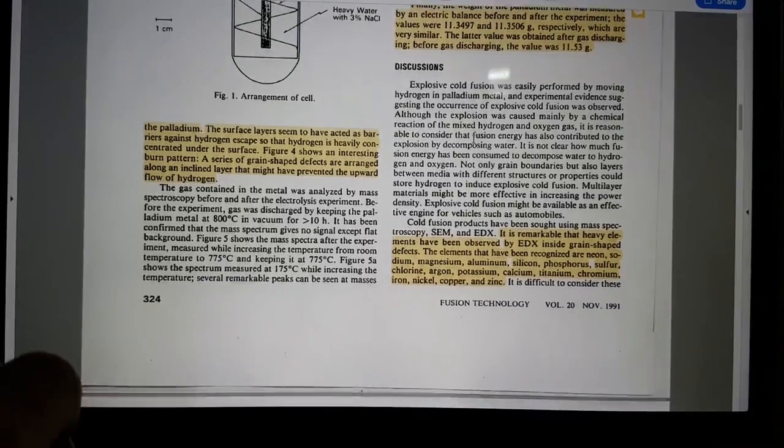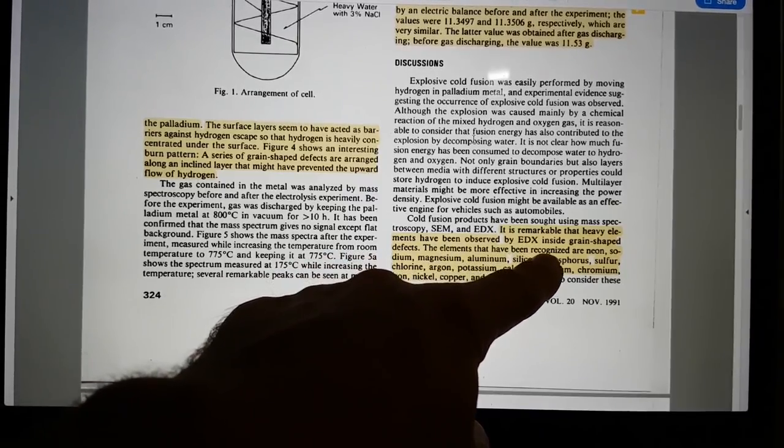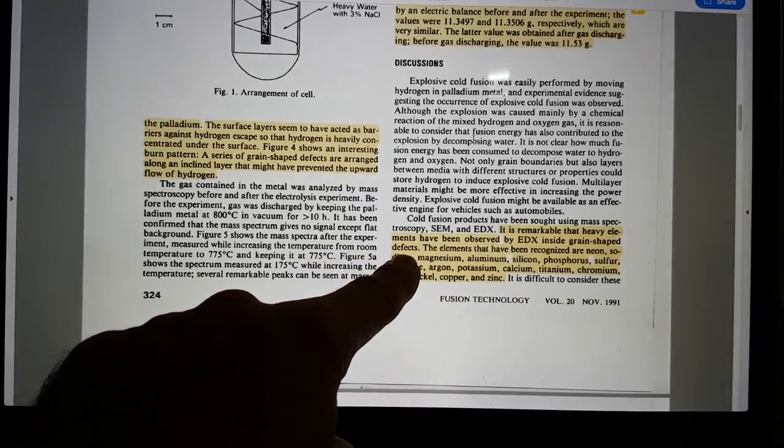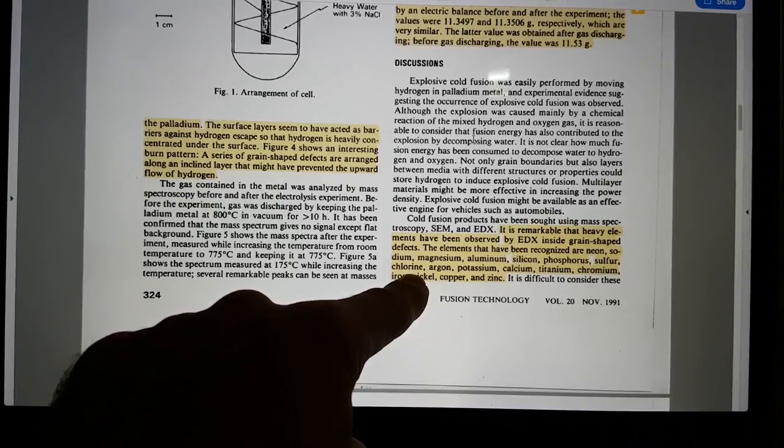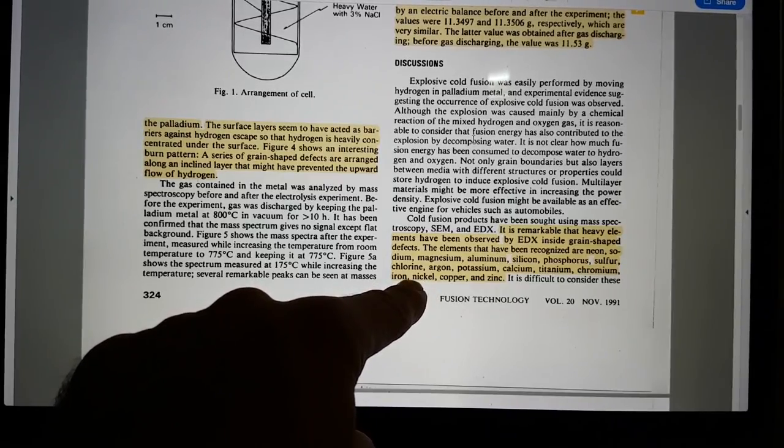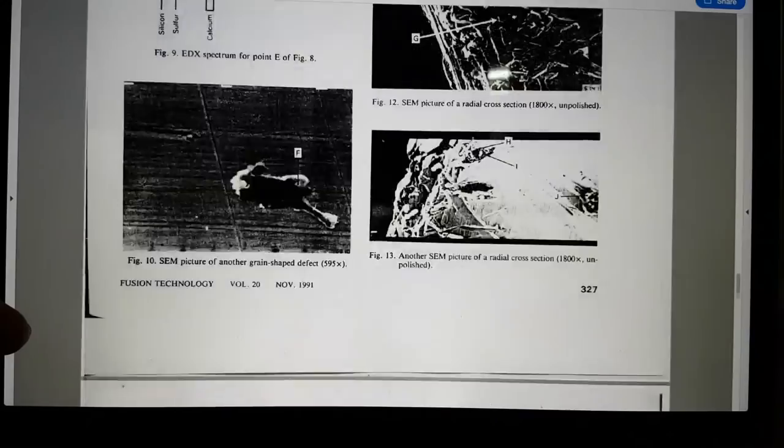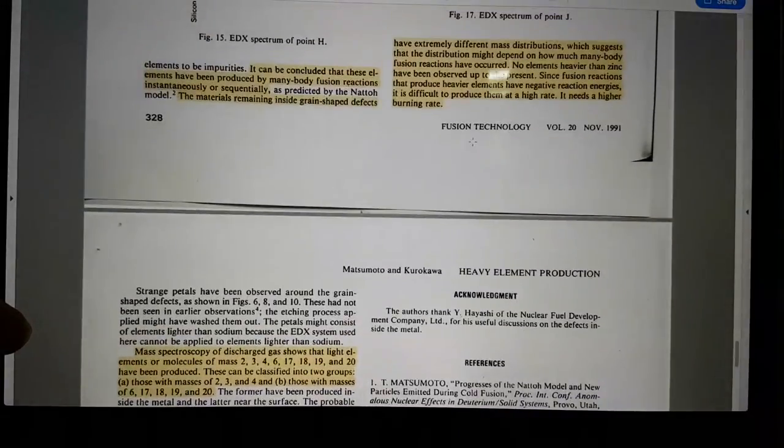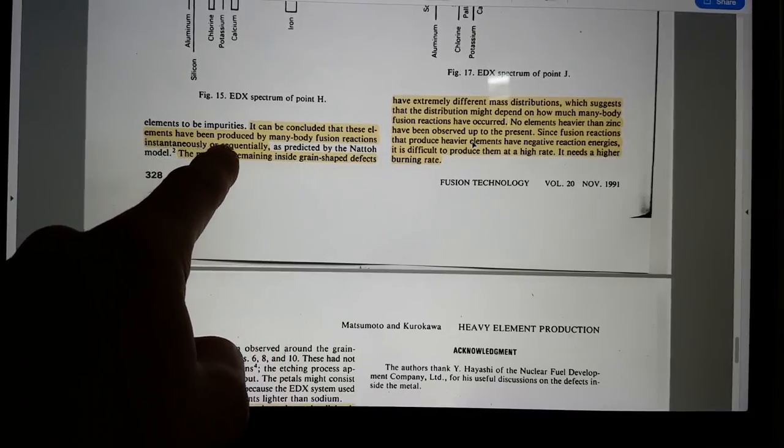So in his discussion here, it is remarkable that heavy elements have been observed by EDX inside grain shaped defects. The elements that have been recognized are neon, sodium, magnesium, aluminium, silicon, phosphorus, sulfur, chlorine, argon, potassium, calcium, titanium, chromium, iron, nickel, copper, and zinc. It is difficult to consider these elements to be impurities. It can be concluded that the elements have been produced by many body fusion reactions instantaneously or sequentially.